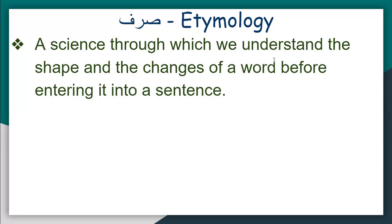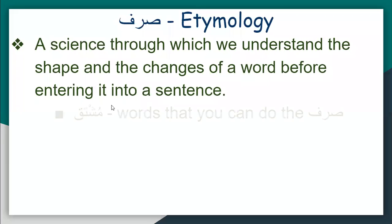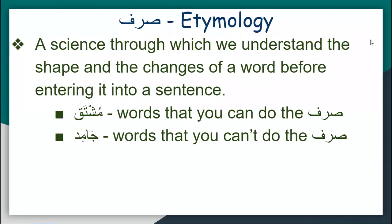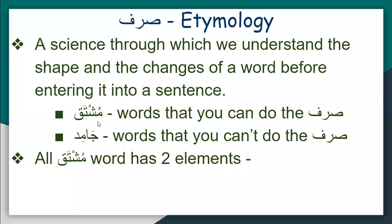Basically it's a rule: if you pick any root word and put it into those shapes, those shapes will create different meanings in the word. Some words in Arabic follow the rules of Sarf — those words are called Mushtaq — and some words don't really follow the rules of Sarf. We only study those that follow the rules of Sarf.